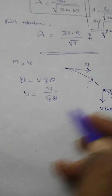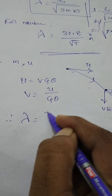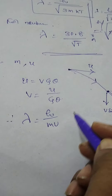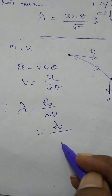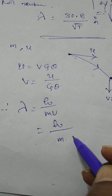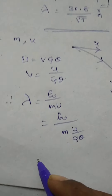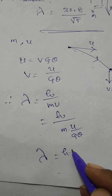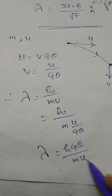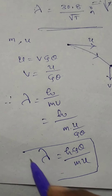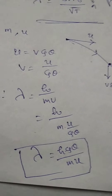Therefore, the corresponding de Broglie wavelength at that point, lambda is equal to h by MV. Substituting V with U by cos theta, lambda is equal to h cos theta by MU.